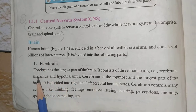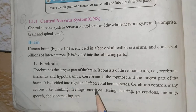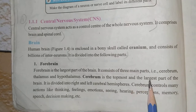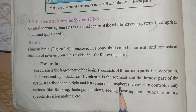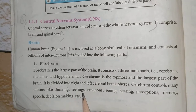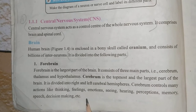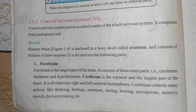The forebrain is the largest part of the brain. It consists of three main parts: cerebrum, thalamus, and hypothalamus. The cerebrum is the topmost and largest part of the brain; it is divided into right and left cerebral hemispheres. Cerebrum controls many actions like thinking, feeling, emotion, sight, hearing, perception, memory, speech, and decision making. If the cerebrum is affected on one side, it will affect the body on the opposite side. The cerebrum controls voluntary actions — actions in which our thinking is involved.